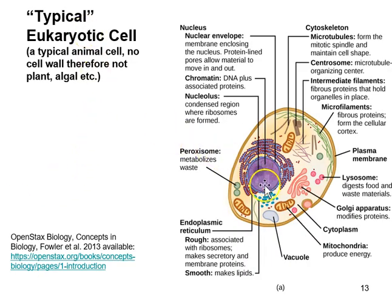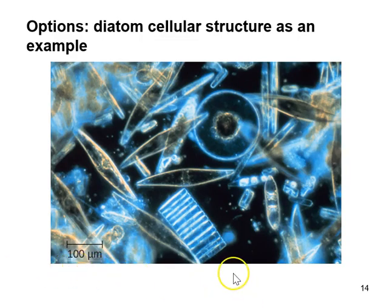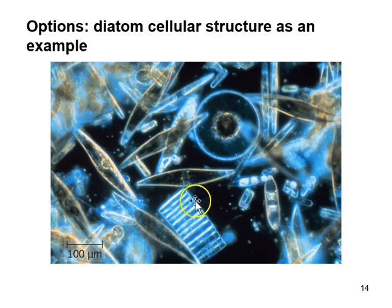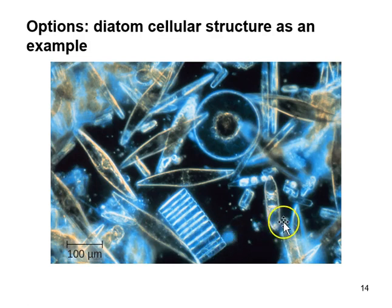Eukaryotic cells have a nucleus and other membrane-bound organelles — there's a lot going on within any typical eukaryotic cell. This is an animal cell, which lacks a cell wall. And if we look at other eukaryotic organisms, this image from the OpenStax textbook shows some of the diversity of the algae group called diatoms — look at all the different fantastic shapes shown here. There are many different forms or shapes of eukaryotic cells. Lots of diversity.